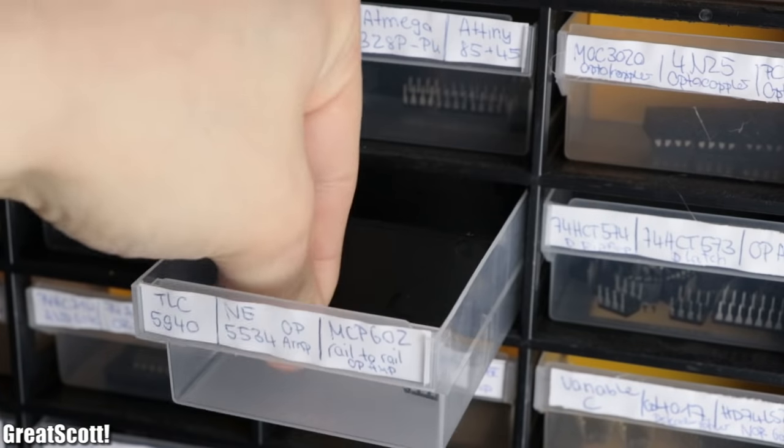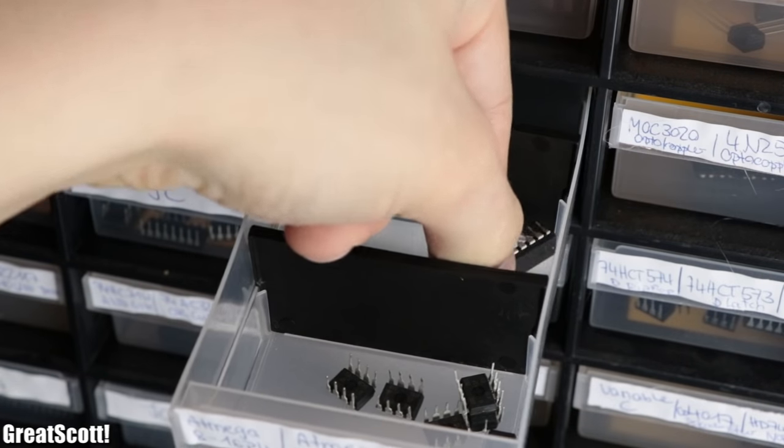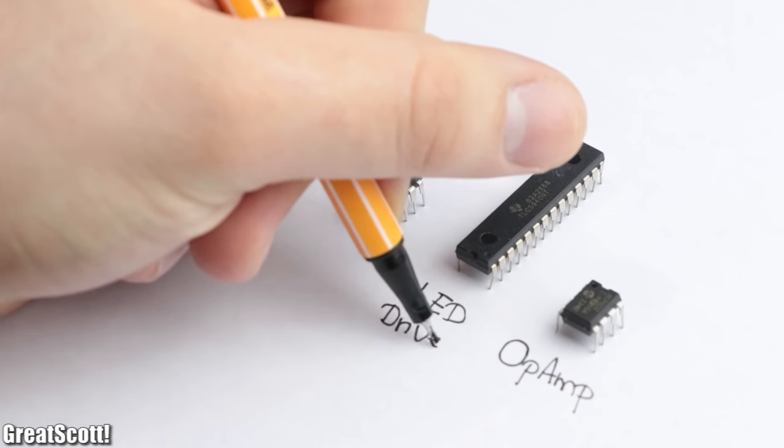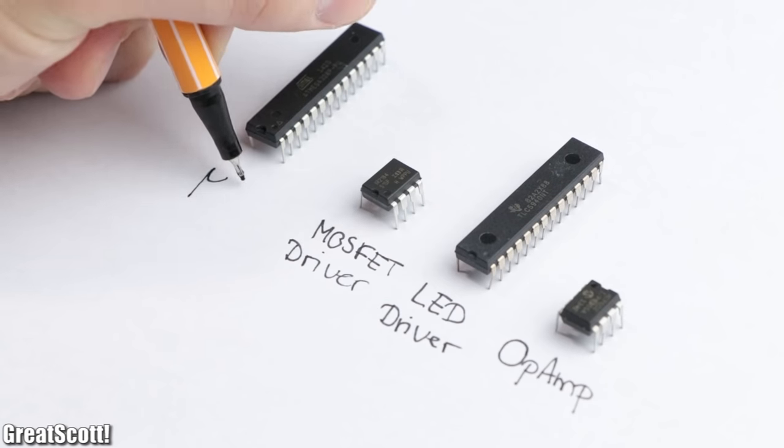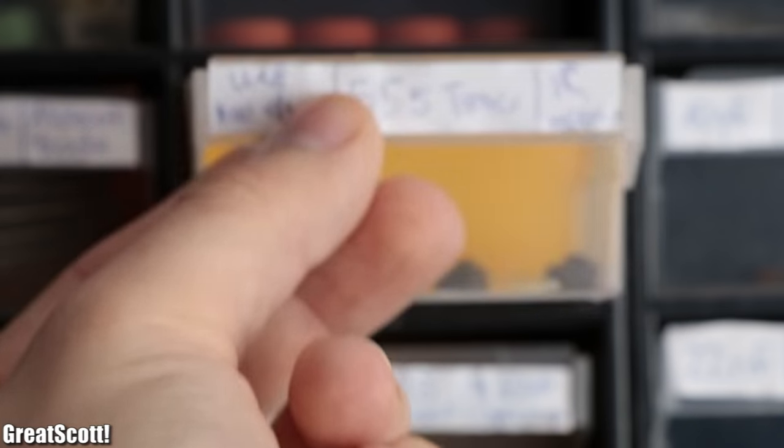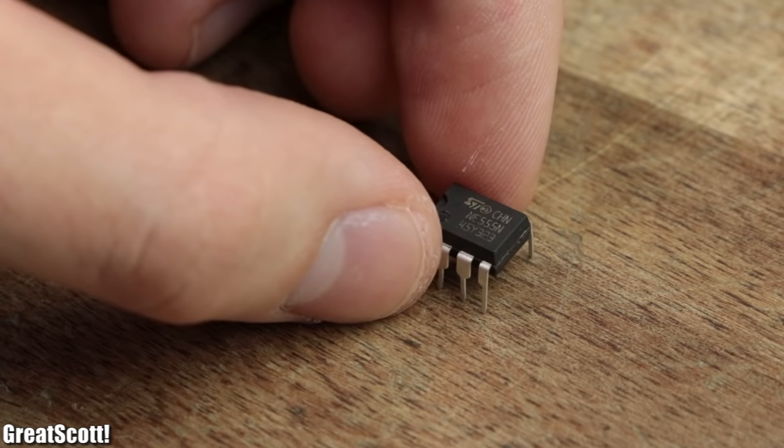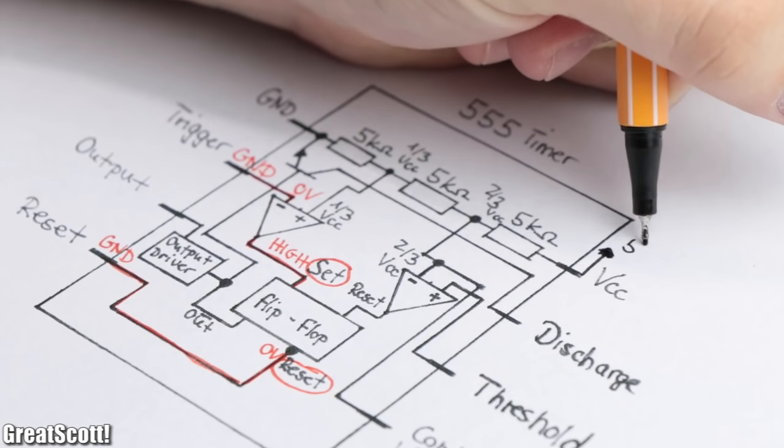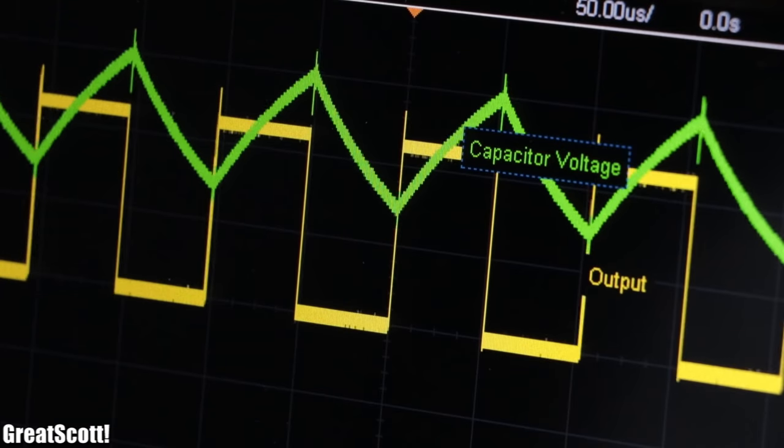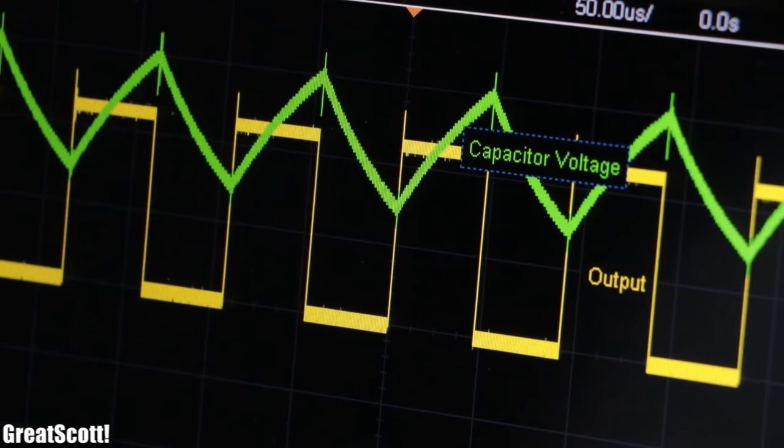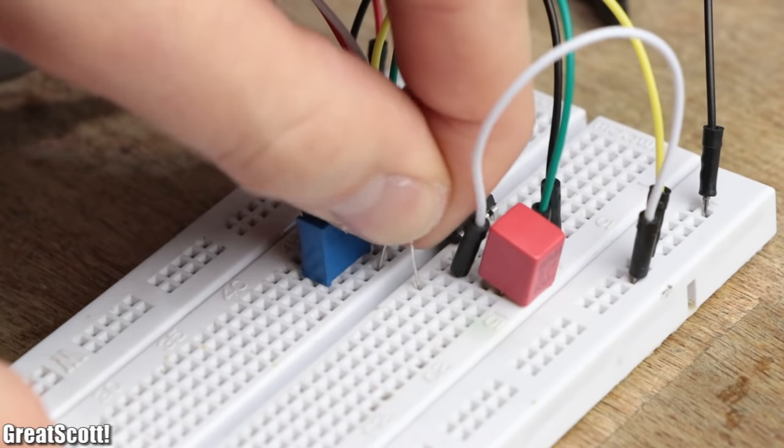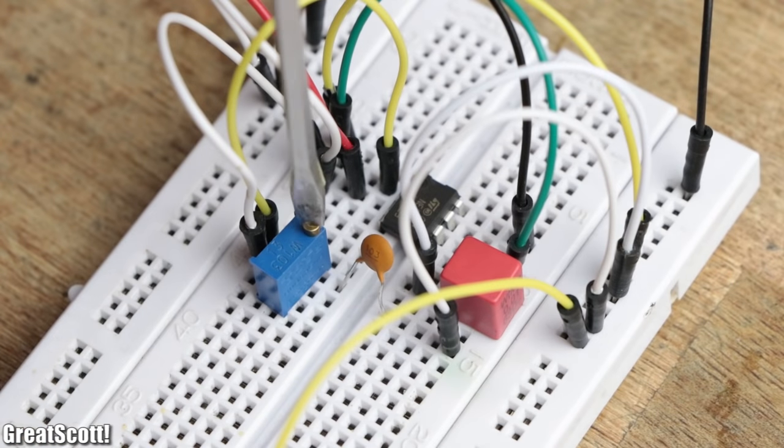Nowadays there exist dozens of integrated circuits, aka ICs, in order to make our life easier while building electrical circuits. But there's one which is most widely used, the so-called 555 timer IC, and in this video I will show you what makes this IC tick and what kind of different functions it fulfills in our circuits by attaching external components. Let's get started.